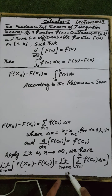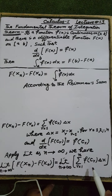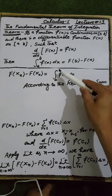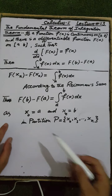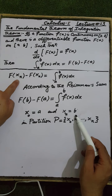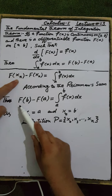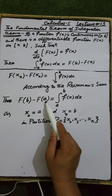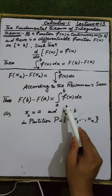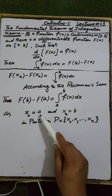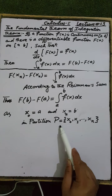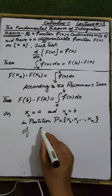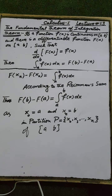The right-hand side is equal to the Riemann sum of f(x) on the interval [a, b]. Since xₙ equals b, F(xₙ) equals F(b), and since x₀ equals a, F(x₀) equals F(a). Therefore, F(b) minus F(a) equals the integral from a to b of f(x) dx, where x₀ equals a and xₙ equals b in the partition P containing elements x₁, x₂, up to xₙ for the interval [a, b]. This completes the proof.